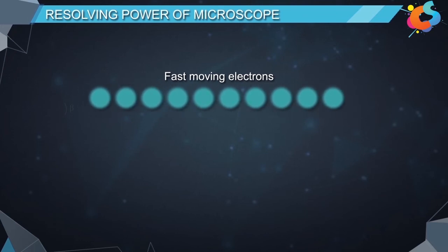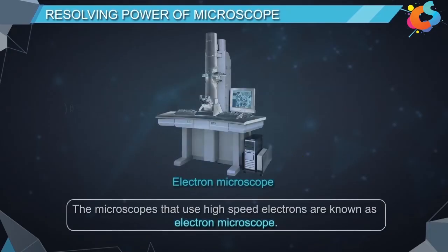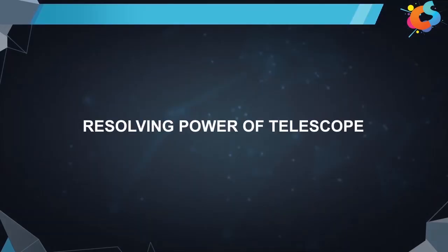At very high speeds, the beam of electrons will behave as waves of very short wavelengths. The microscopes that use high speed electrons are called electron microscopes.